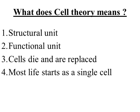Cell theory states three major points. Number 1, the cell is the smallest unit of structure of all living beings. Number 2, the cell is the unit of function of all living beings. Third, Omnis cellula e cellula — all living cells arise from a pre-existing cell.